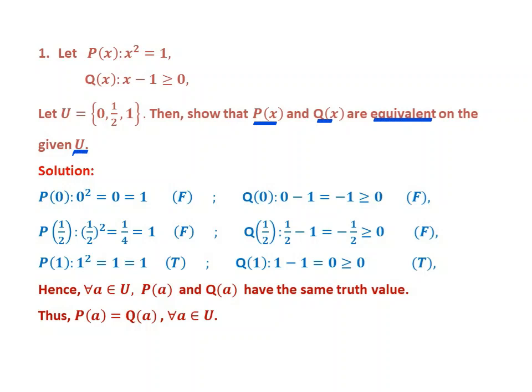Here, since we have two open propositions P(x) and Q(x), and the universal set U is also given, we need to show whether those two open propositions P(x) and Q(x) are equivalent on the given set U. As a solution, let us check whether those two open propositions have the same truth values for the given universal set U.